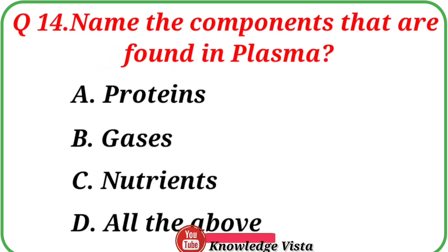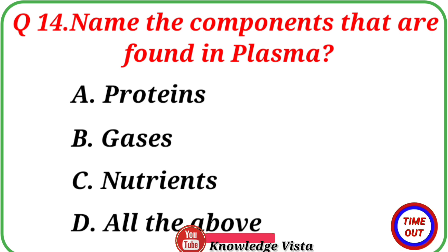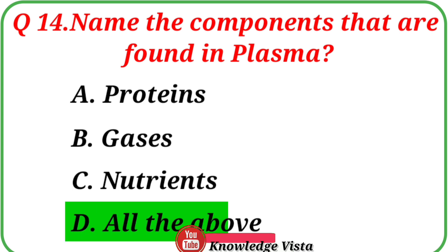Question number 14: Name the components that are found in plasma. Option A: Proteins. Option B: Gases. Option C: Nutrients. Option D: All of the above. The correct answer is option D, All of the above. Plasma consists of amino acids, proteins, nutrients, gases, etc.